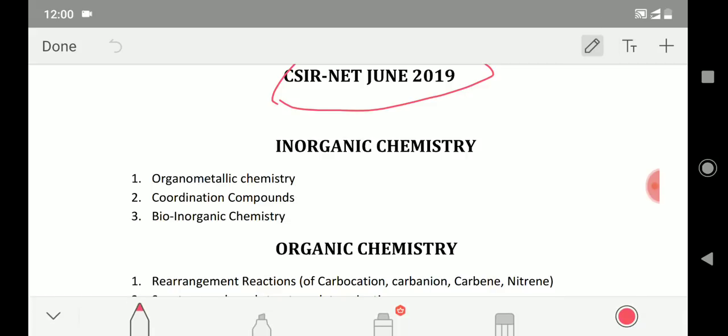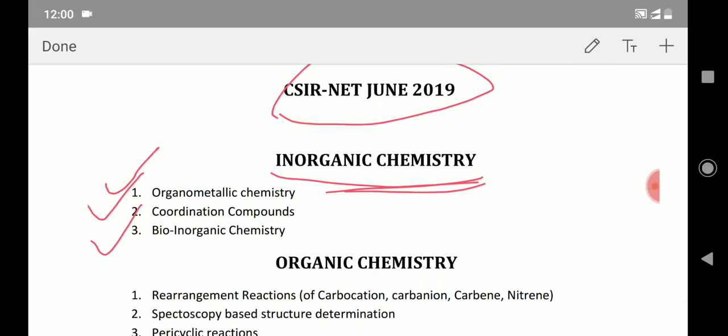If I talk about inorganic chemistry first, you can see these three are the most important areas: organometallic chemistry, coordination compounds, and bioinorganic chemistry. These three are the most important parts and almost 80 to 90 percent of questions will be coming from these particular three topics.